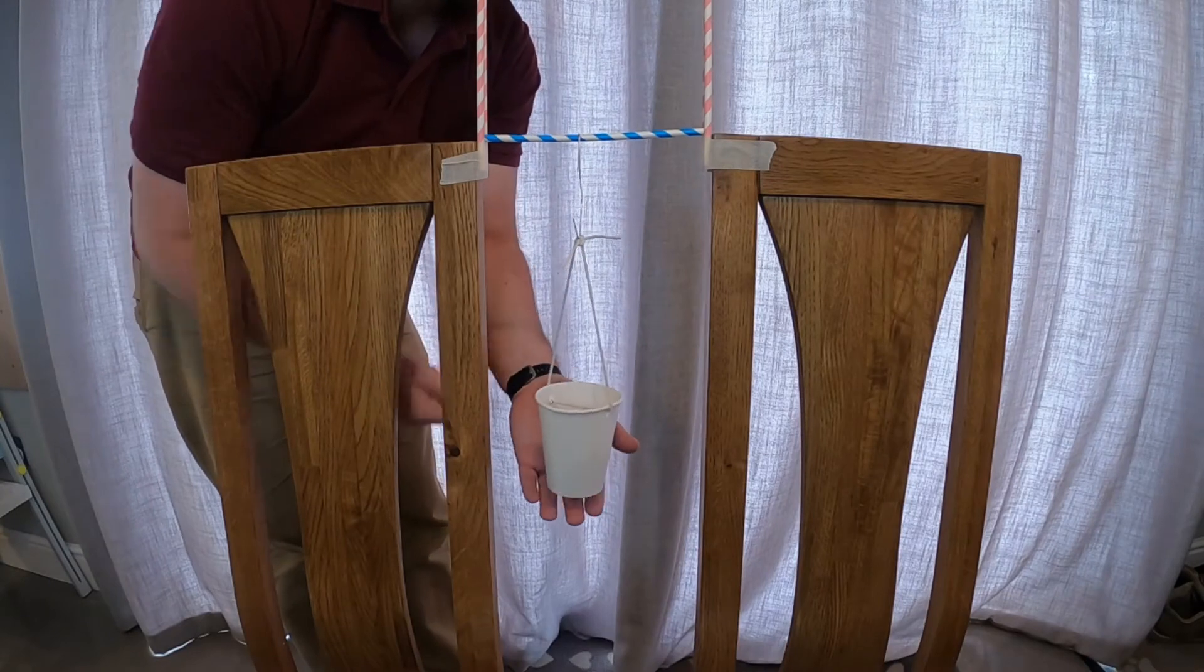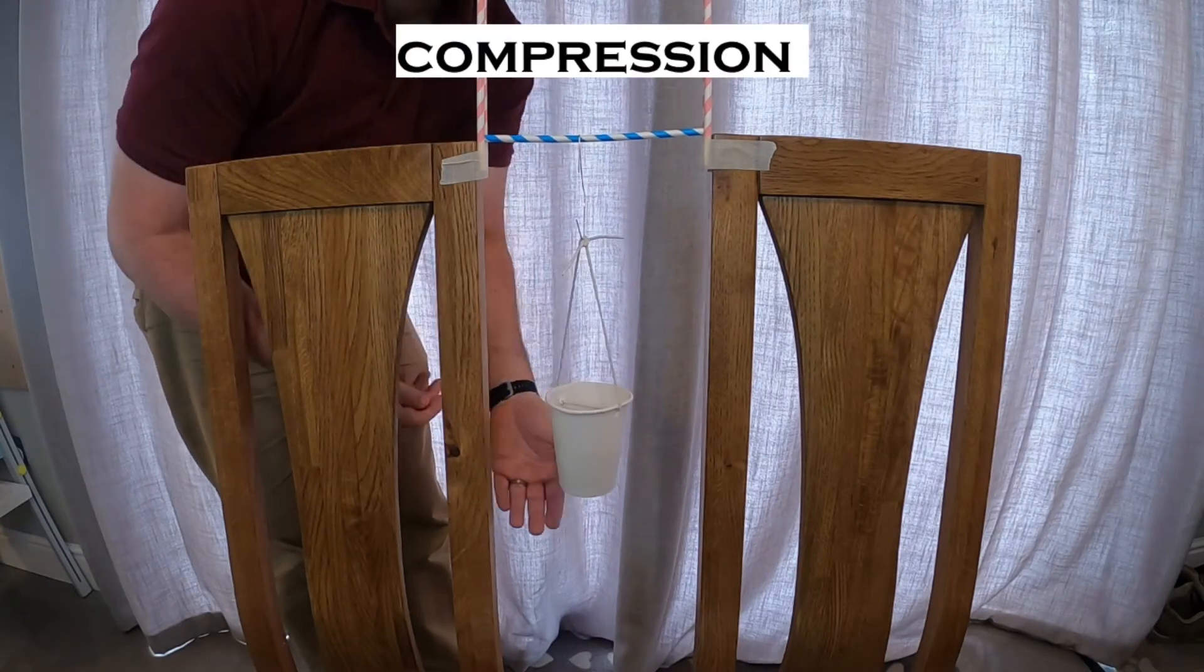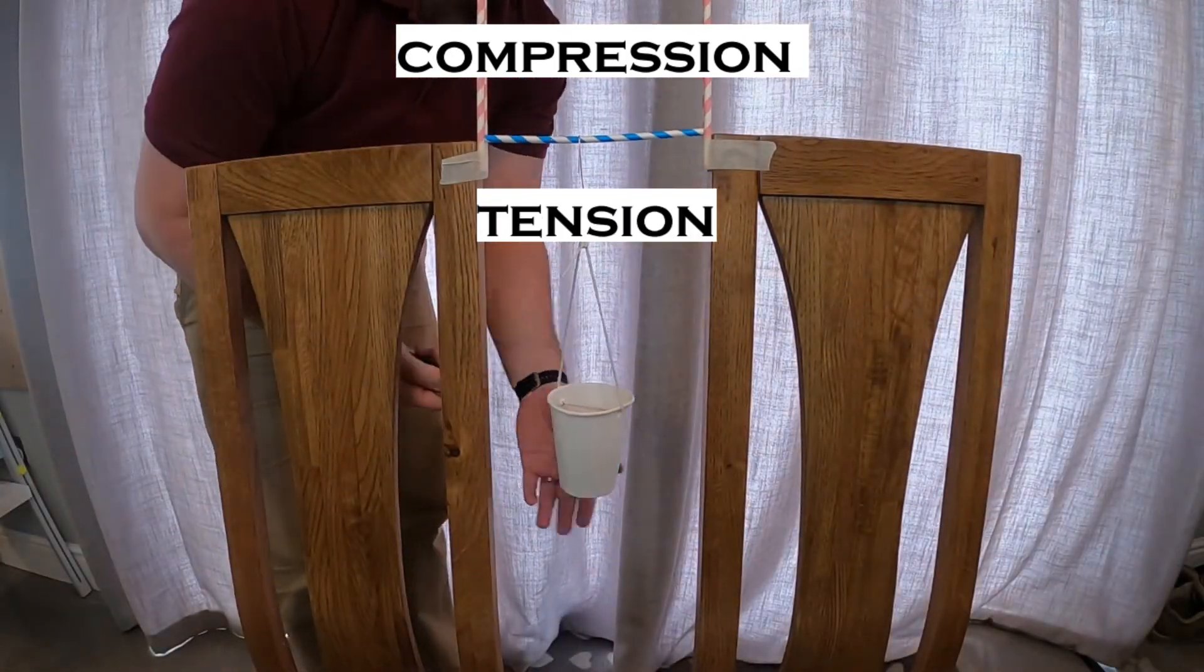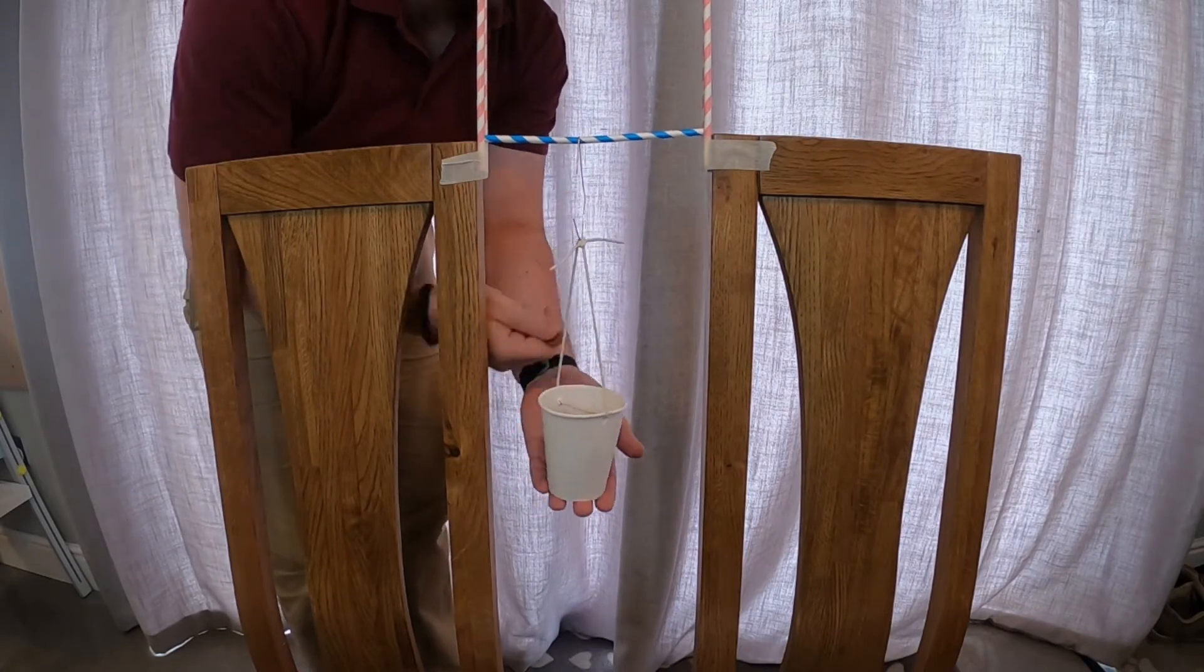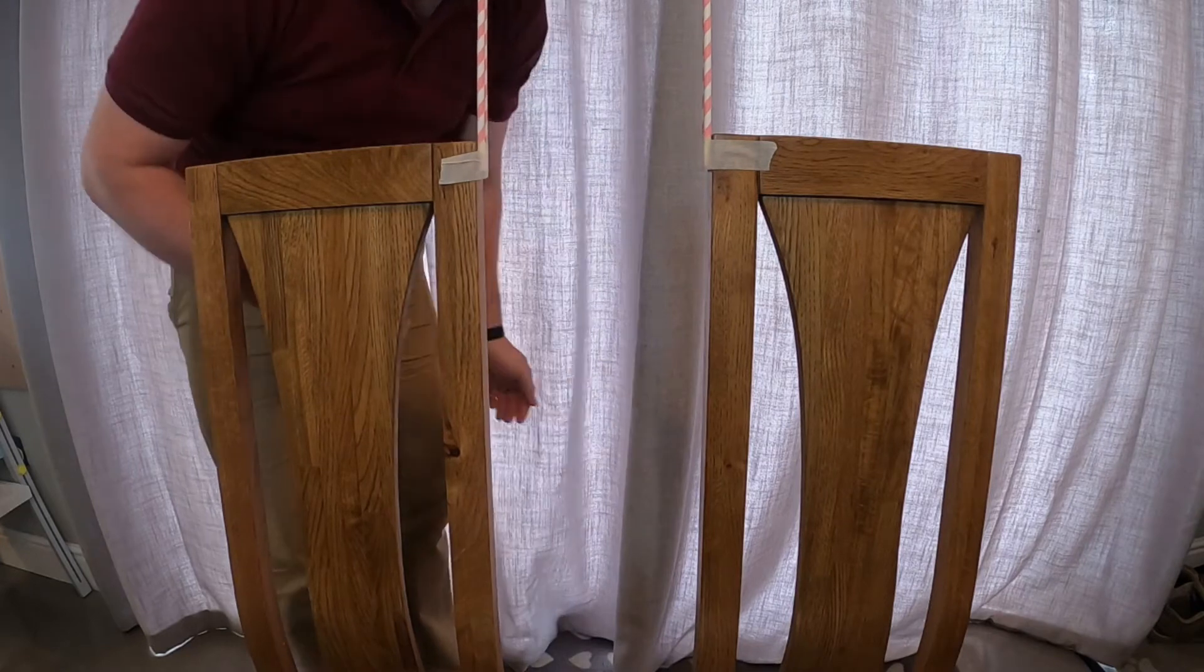Well, with the single beam bridge, the top part of that straw was under compression, and the bottom part of the straw was under tension. As it continues to deal with these forces with more and more weight being added, it causes the bridge to buckle and eventually collapse, as we saw, when the tension underneath got too much for the straw to bear.